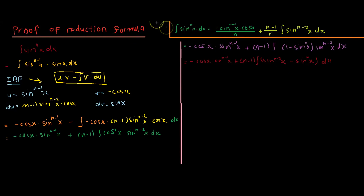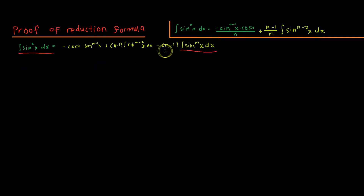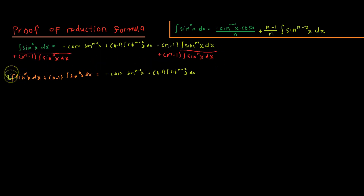After applying sine of x to the power of n minus 2 within the brackets, we split the integral into two different parts, multiplying the n minus 1 through to both terms. Rewriting the entire line, we notice that the integral of sine of x to the power of n appears on both sides. Adding n minus 1 times the integral of sine of x to the power of n to both sides, we get n times the integral of sine of x to the power of n equals what we had with the n minus 1 removed from the right side.